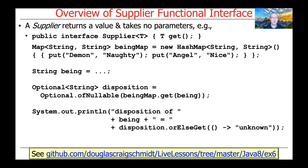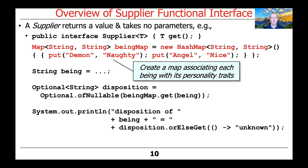Here's a simple example from my GitHub repository in the ex6 folder. This example is going to create a HashMap which will keep track of beings like demons, angels, and wizards, and their particular dispositions. Demons are naughty, angels are nice, perhaps wizards are wise, and so on. This will be represented as a map.